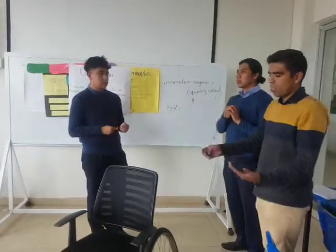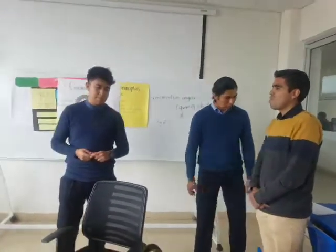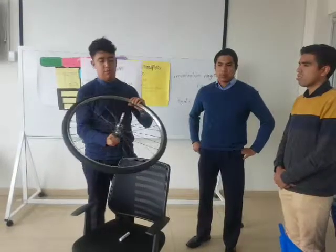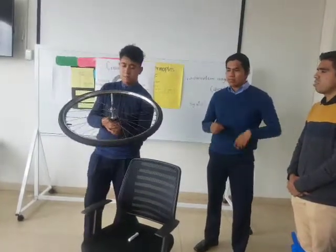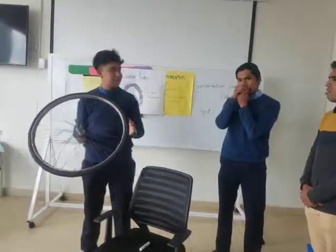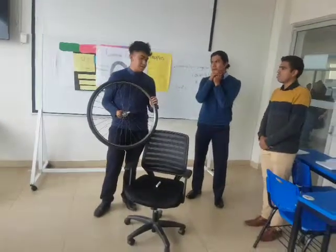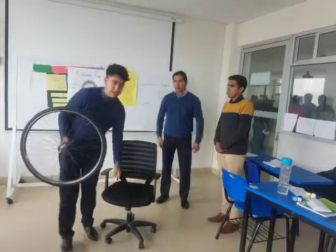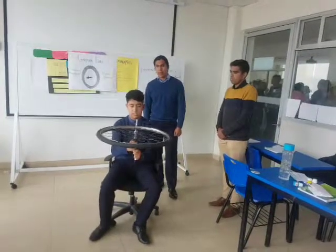So the conclusion is that the angular momentum will be found along the axis. It happens when there is a parallelism with the axis of the wheel.